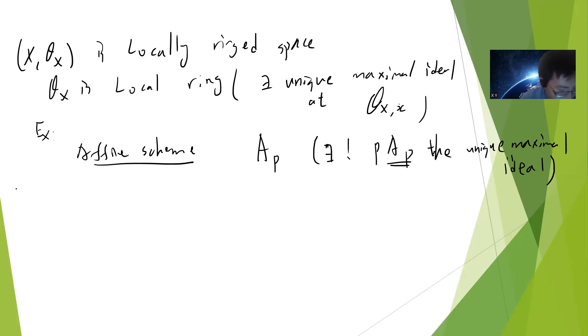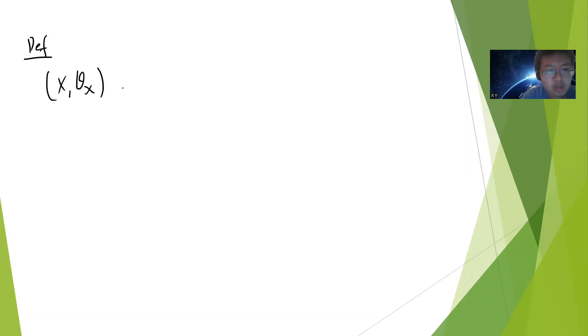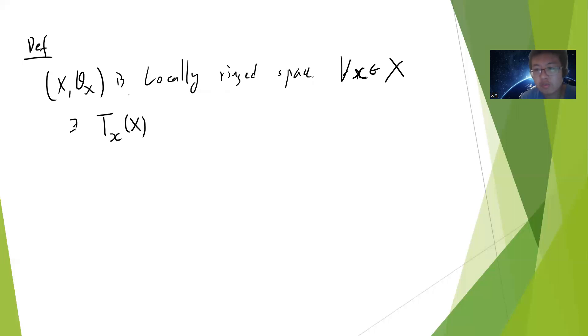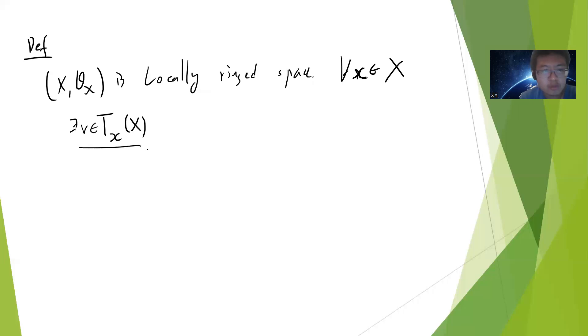Now since this is a local ring space, we can define a scheme. For the definition, we start from X, O being a local ring space. For X, using this notation, there is an open cover of X — an open set cover of X.